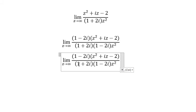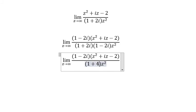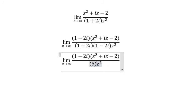Then 1 plus 2i multiplied with 1 minus 2i gives 1 plus 4, which equals 5. So we have 1 minus 2i over 5.